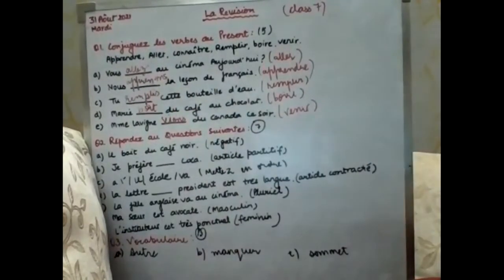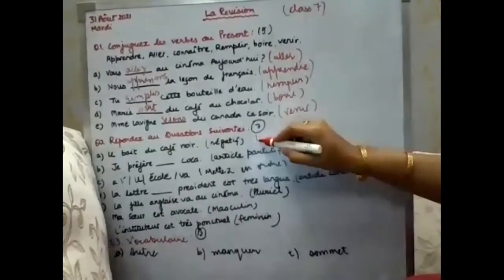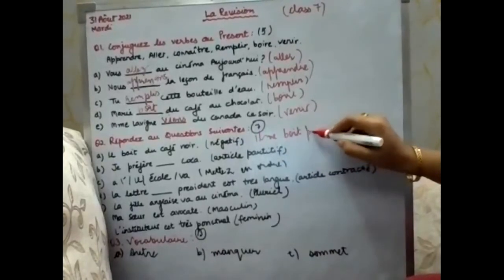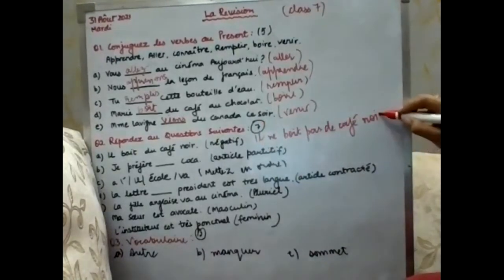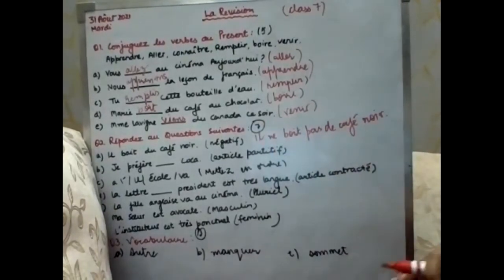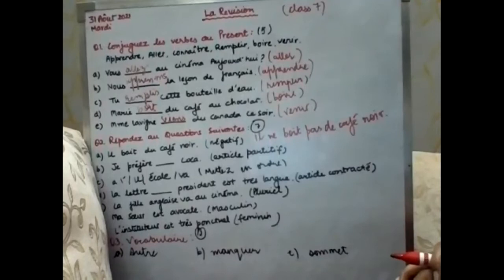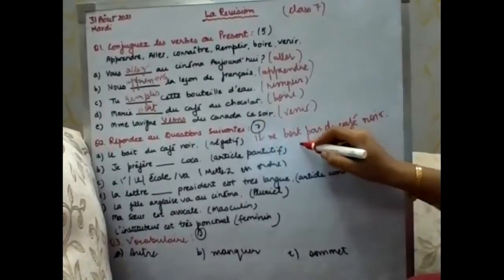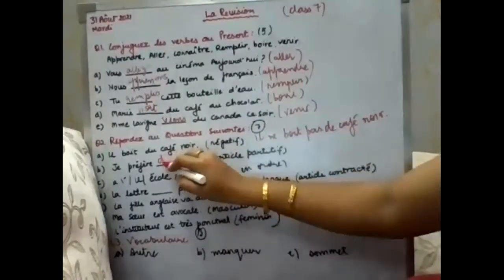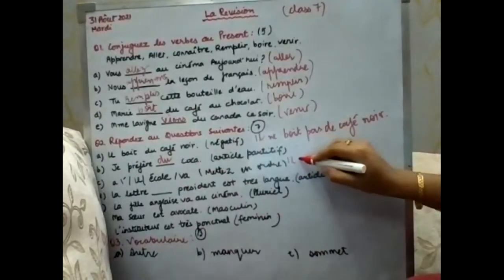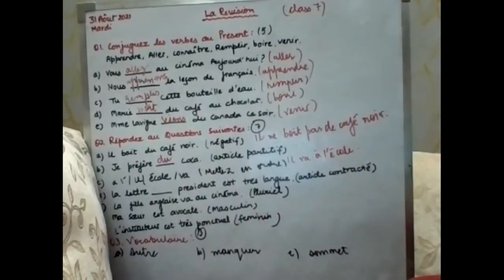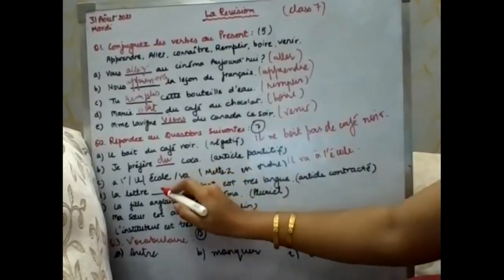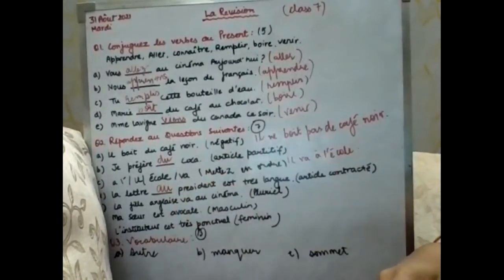Question number two: the first part, you have to change it into negative. Whenever we do the negation of a sentence, the partitive article changes to 'de'. For example, 'vous préférez du' changes in negative. Next: 'il va à l'école' — he goes to the school. 'La lettre du président' — president is masculine singular, so you will use the contracted article 'au président'.